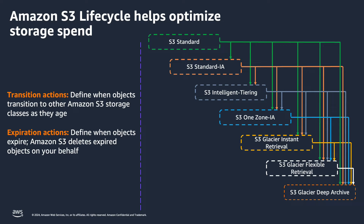The chart on the right shows storage class transitions that are allowed. As you can see, it follows a waterfall method, which means you can only go down the chart but not the other way around. For example, you can transition from Amazon S3 Standard to any other storage class, but you cannot go back from Amazon S3 Standard Infrequently Accessed to Amazon S3 Standard.